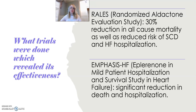The EMPHASIS trial — Eplerenone in Mild Patient Hospitalization and Survival Study in Heart Failure — also revealed a significant reduction in death and hospitalization with less than 1% incidence of gynecomastia or breast pain. One other trial is the EPHESUS trial, which assessed the impact of eplerenone on mortality in patients after an acute MI with an ejection fraction of less than 40% and clinical signs of heart failure. This showed significant reduction in all-cause mortality at 30 days in addition to guideline-directed medical therapy.